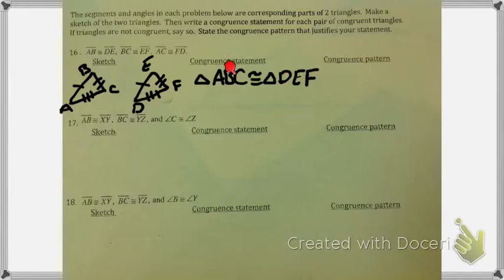I also know that the length of segment AB is congruent to segment DE, segment BC is congruent to EF, and so on. The way I know this is true is because these three sides correspond and are congruent to these three sides. So my congruence pattern would be side, side, side.